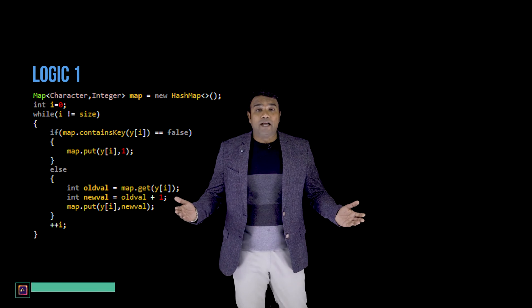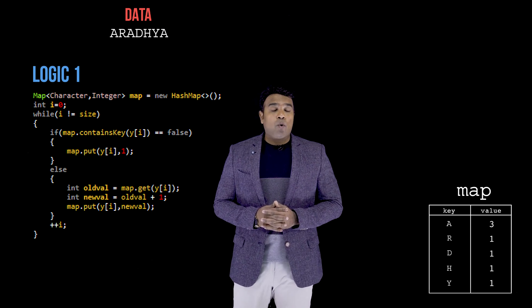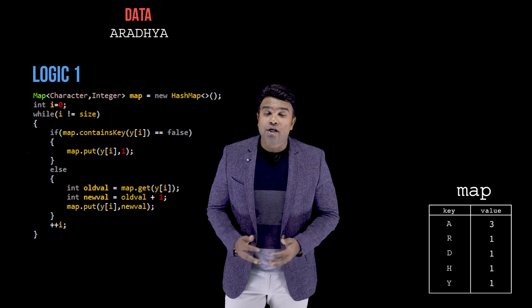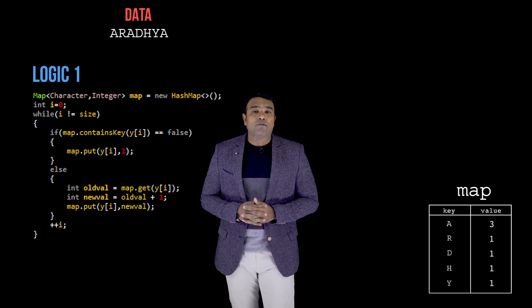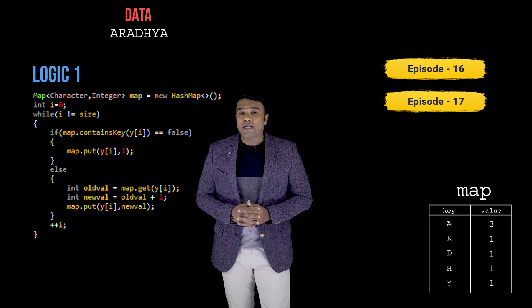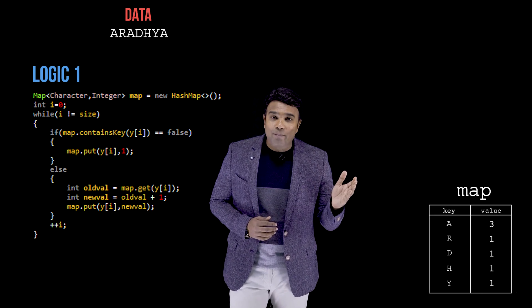Using the logic from the previous episode, we successfully placed data onto the map data structure. Before we proceed, let me caution viewers: if you have not watched the previous episode on maps or the episode on the for-each loop, I recommend you stop, watch those two episodes, and then come back. For those who have been watching regularly, let's get started.